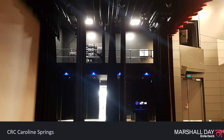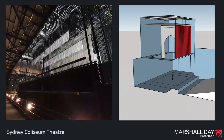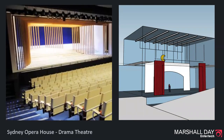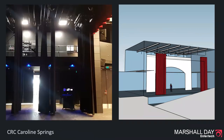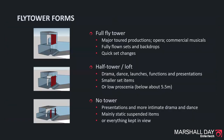So to recap: the three main fly tower forms are the full fly tower, where you can fly full sets in and out; the hybrid, where smaller items or shorter sets can be flown in and out; or no tower at all. Each has their place and each can provide flying functionality of some kind.